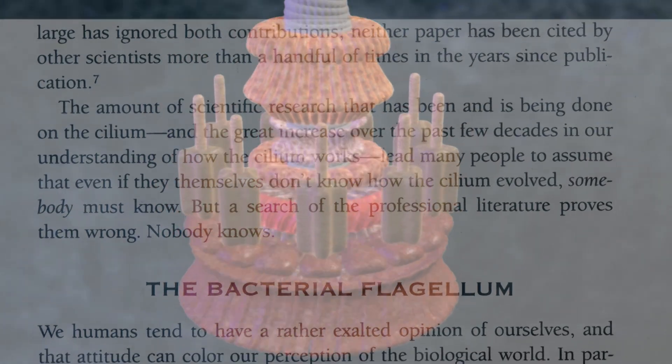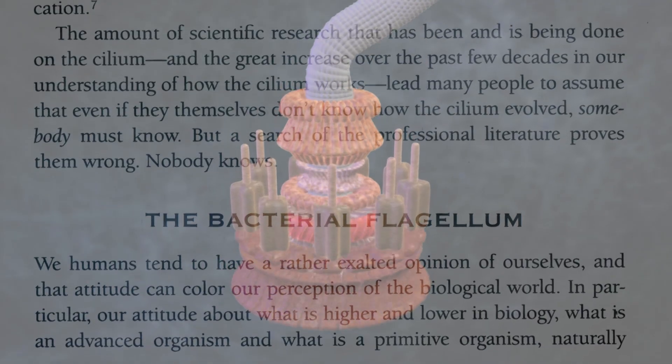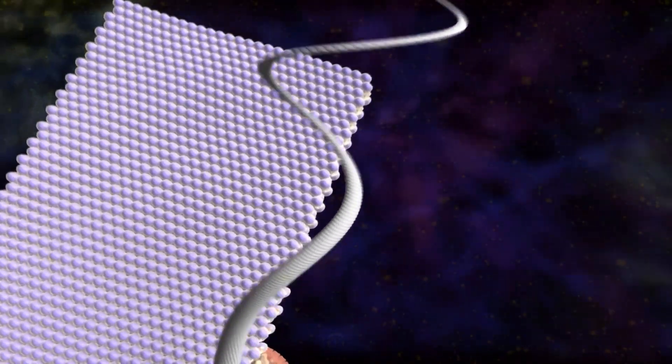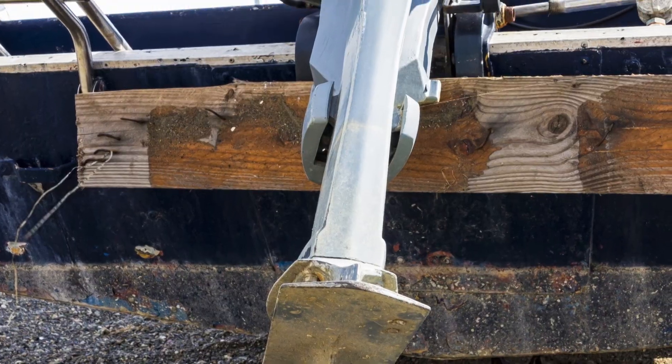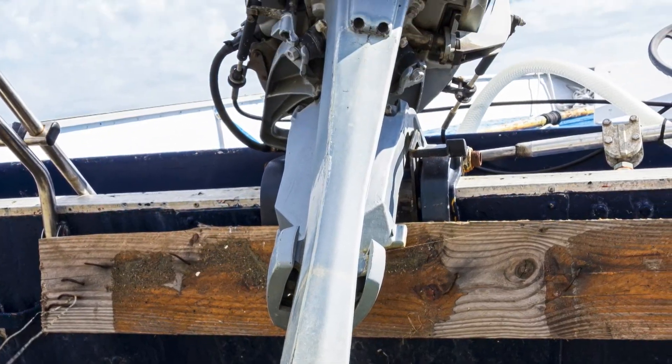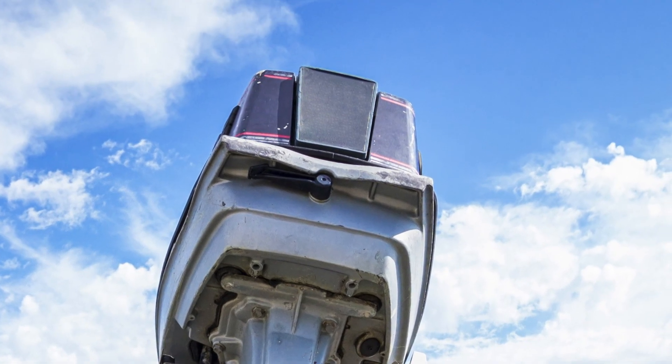The bacterial flagellum was one of the central examples of irreducible complexity Behe highlighted in his book. If you take away the propeller, if you take away the motor, if you take away the clamps that hold it onto the cell's membrane, take away any of a number of different parts, it's not that the flagellum is going to spin half as fast as it used to — it doesn't work at all. It's like taking the propeller off of an outboard motor on your boat and wondering how far you can go in the water. You can't go anywhere.